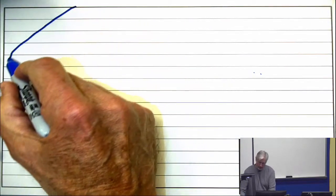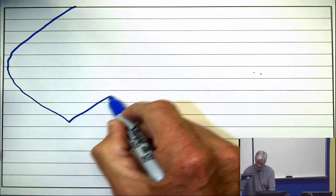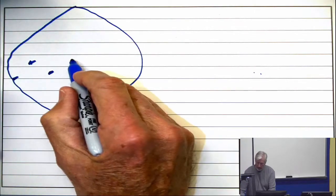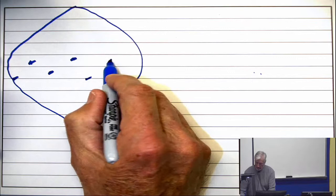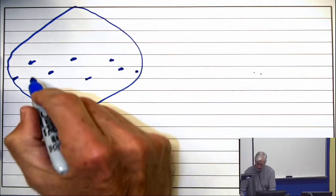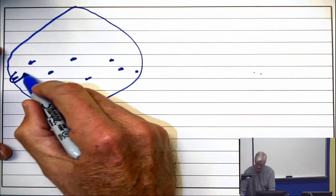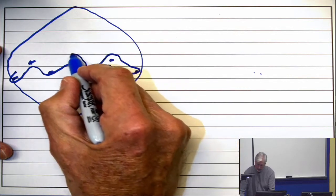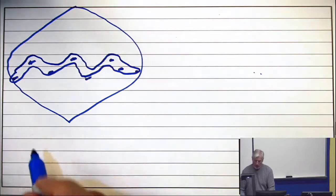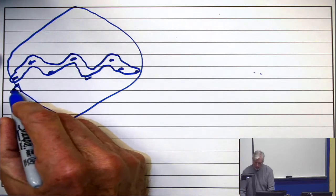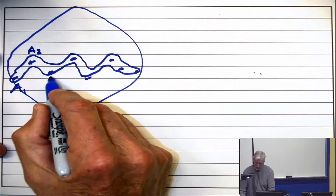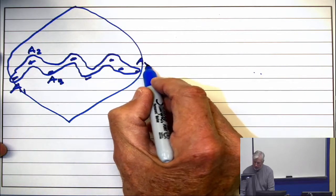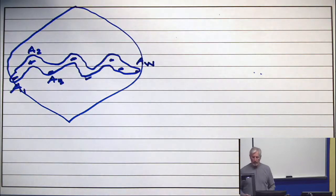We take the subset lattice, and now we envision the biggest anti-chain of them all. Here it is. Here's a bunch of sets that are pairwise incomparable. There's set A1, there's set A2, there's set A3, over to some A sub W, where W is the width.